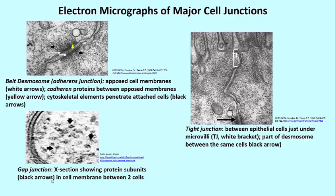Cell junctions. There are tight junctions, adherence junctions — which we'll talk about by another name in a moment — and desmosomes. Membrane proteins participate in these cell junctions, and you'll see in a moment that cadherins play a major role.